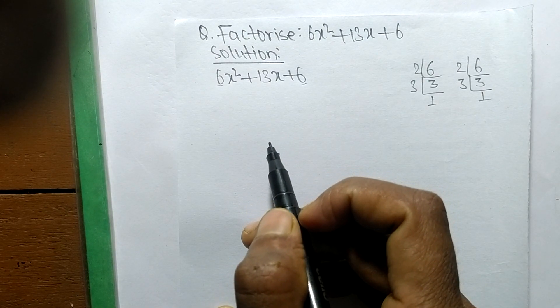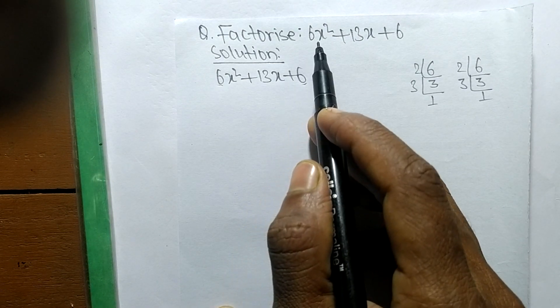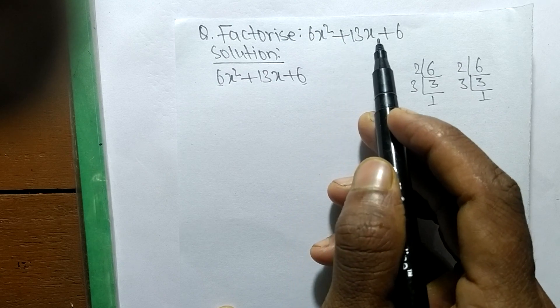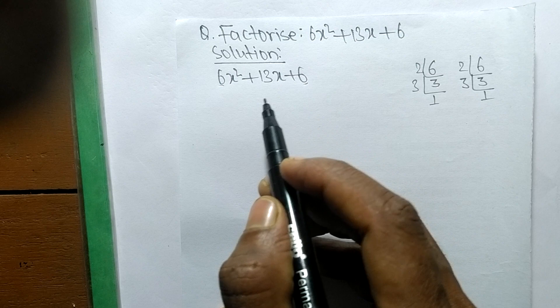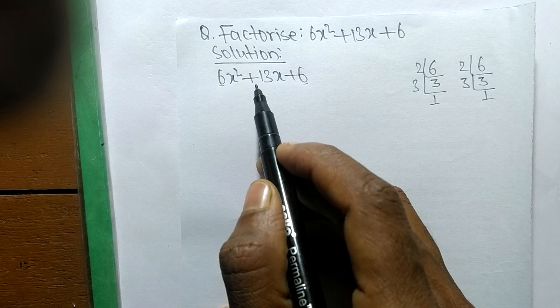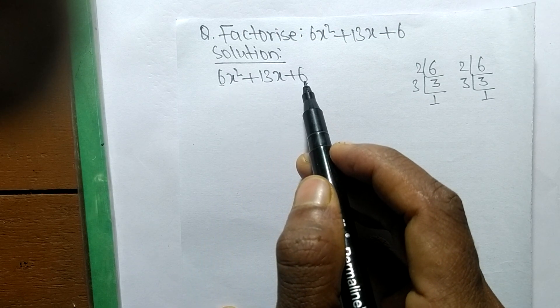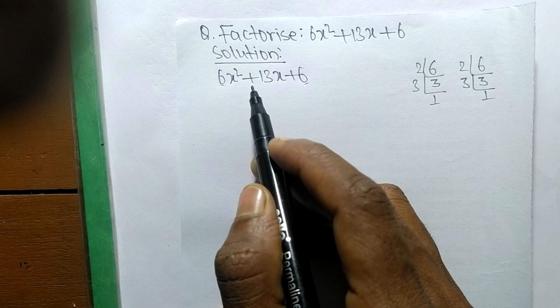So today in this video we shall learn to factorize 6x² + 13x + 6. For the solution of factorize 6x² + 13x + 6, first of all we have to find out the prime factors of first and last number.